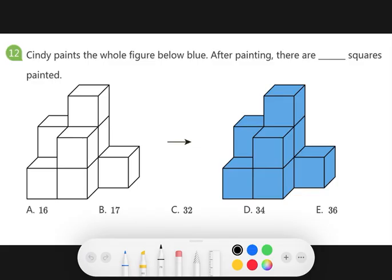So, front. How many cubes can you see from front that has been painted? One, two, three, four, five.